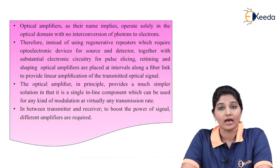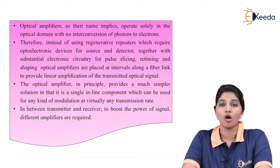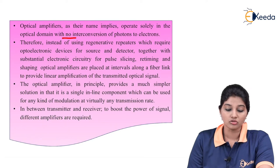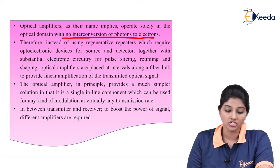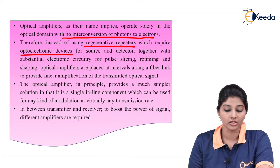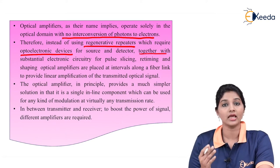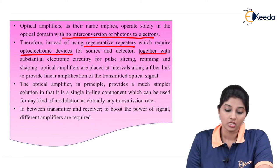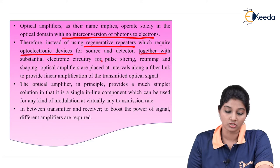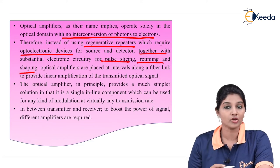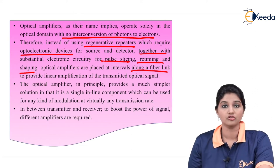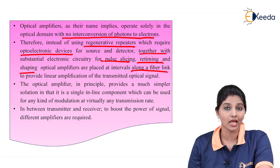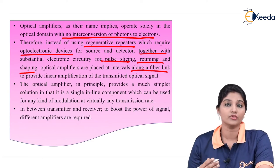An optical amplifier, as its name implies, basically operates in the optical domain and there is no interconversion of photons with electrons. Instead of using regenerative repeaters, which require optoelectronic devices for sources as well as for detectors together with an electronic circuit — which includes pulse splicing, retiming and reshaping of the pulse — the optical amplifiers are placed at regular intervals along a fiber link, so we can regenerate the signal without any loss.